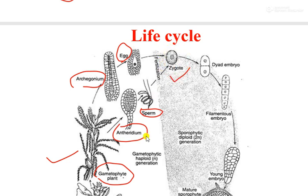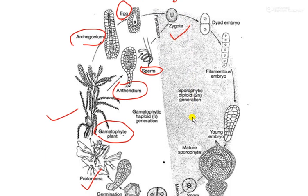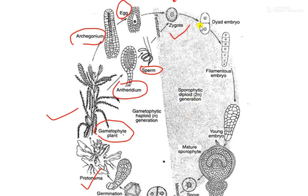The male and female gametes fuse, resulting in fertilization. As a result of fertilization, we get a diploid zygote. With the development of the zygote, the gametophytic phase ends and the sporophytic phase begins.